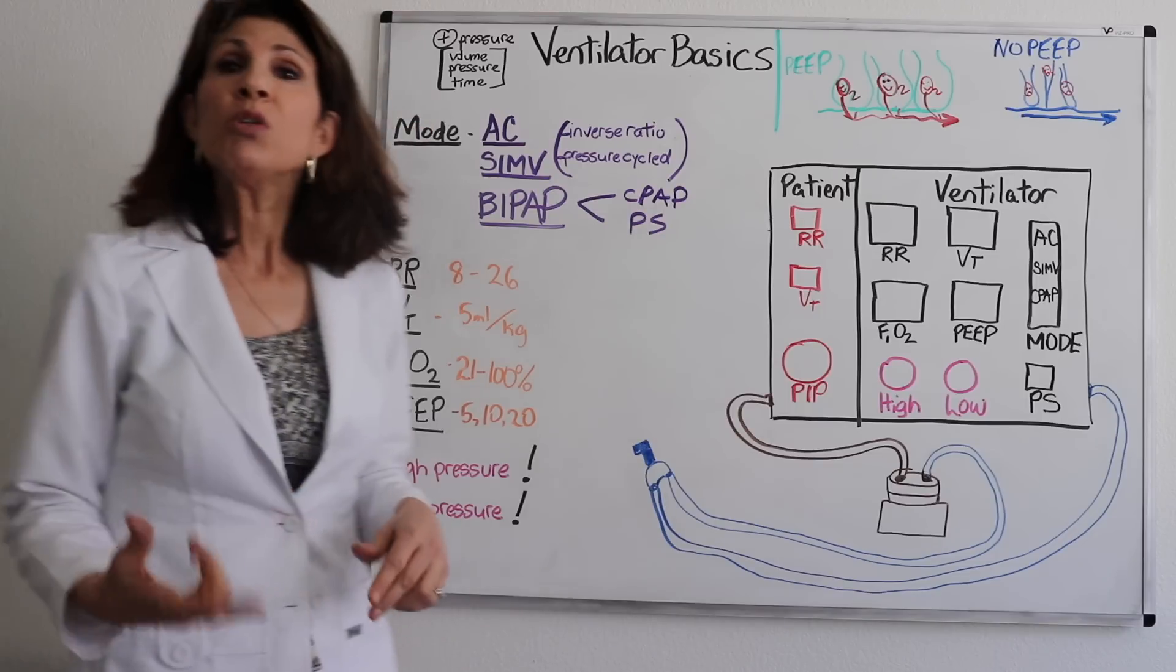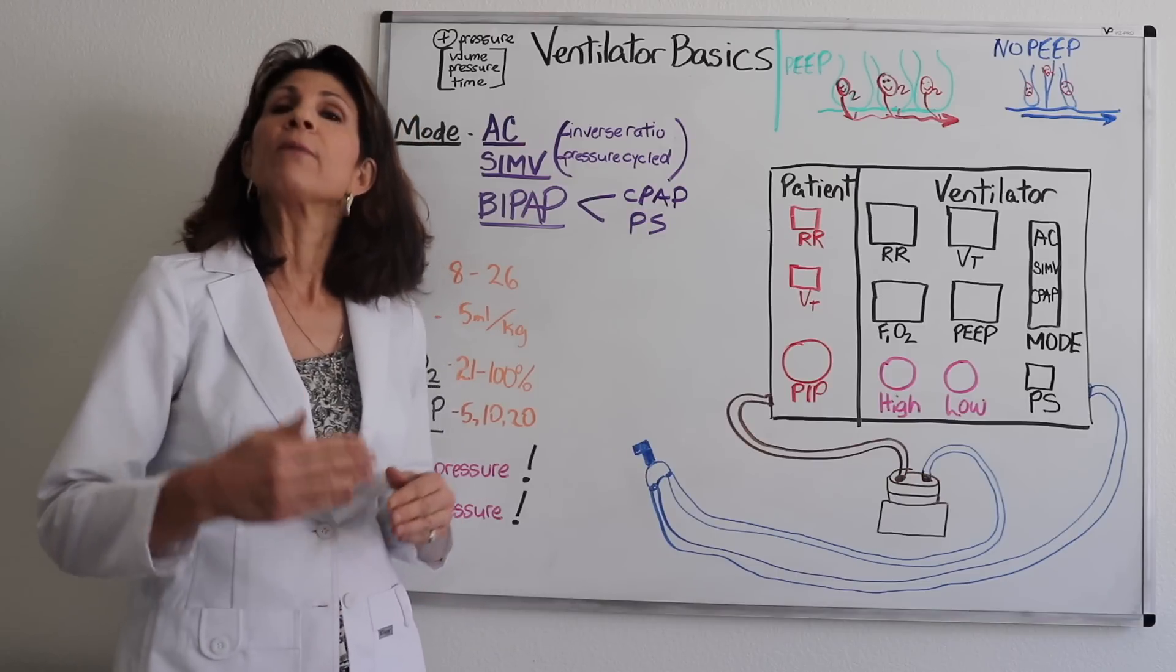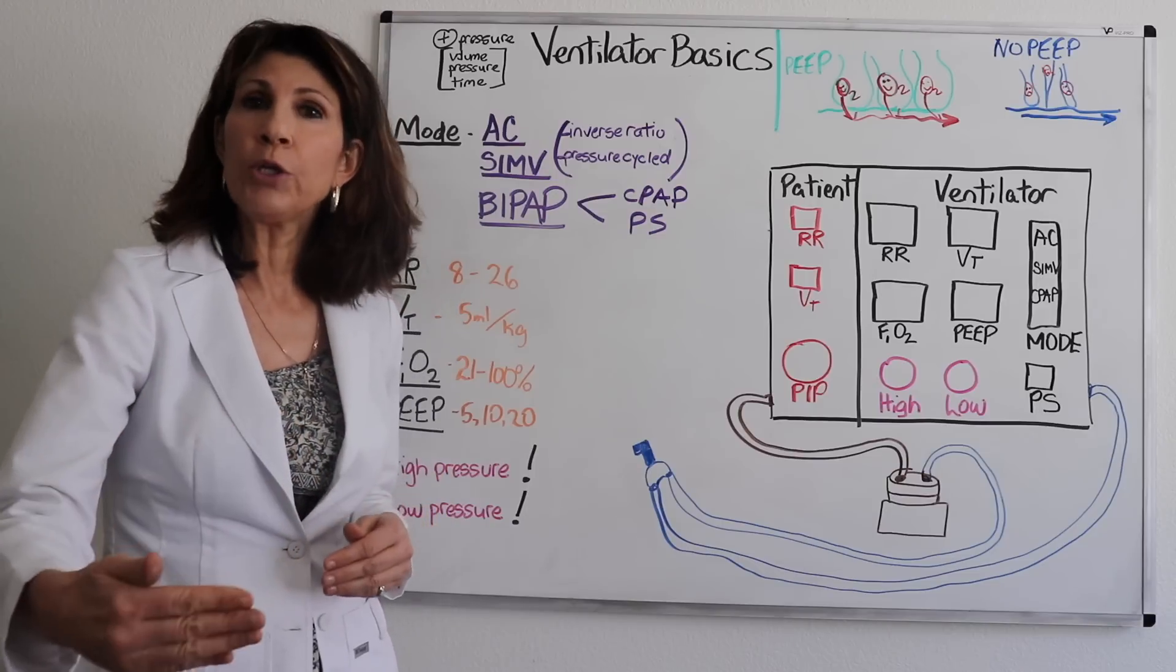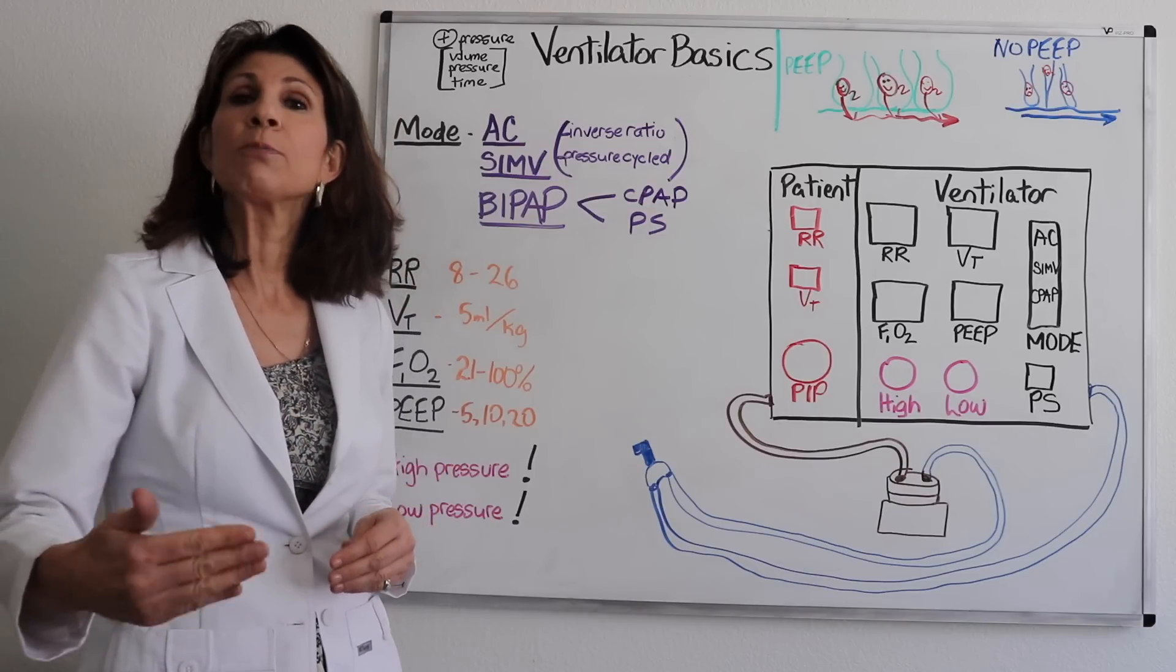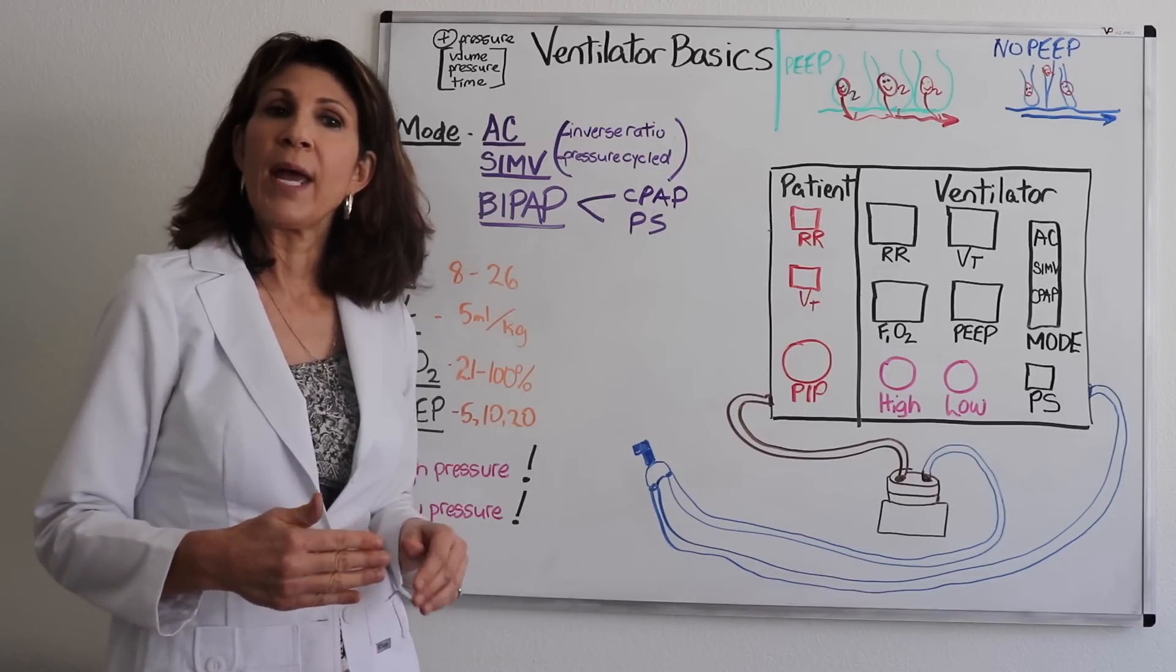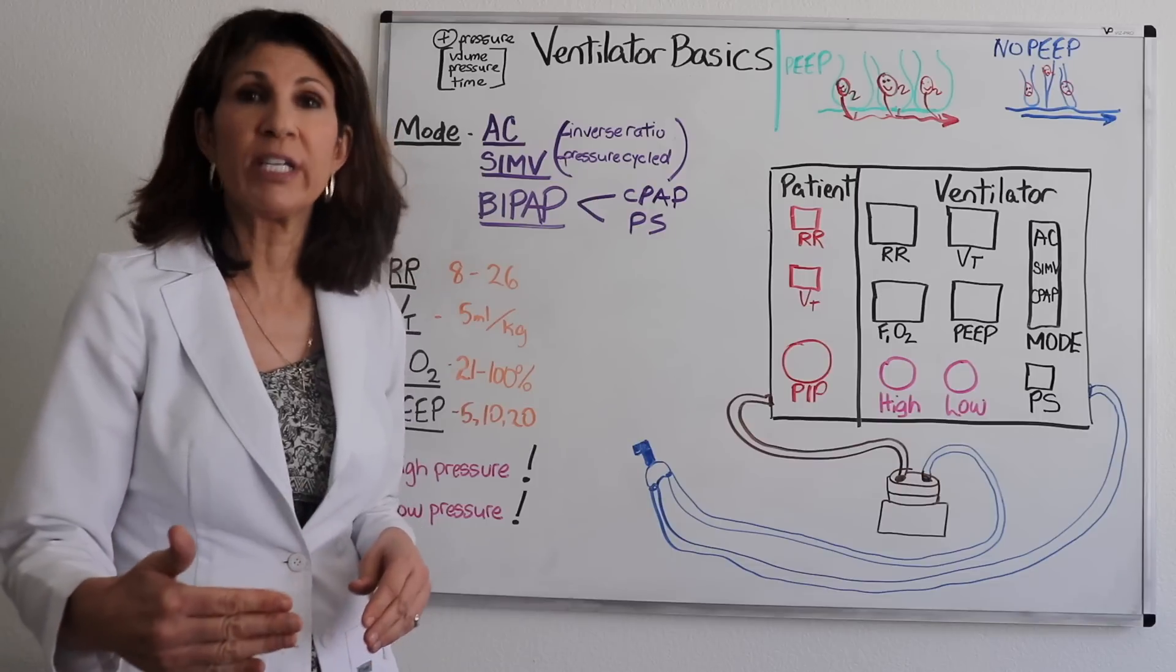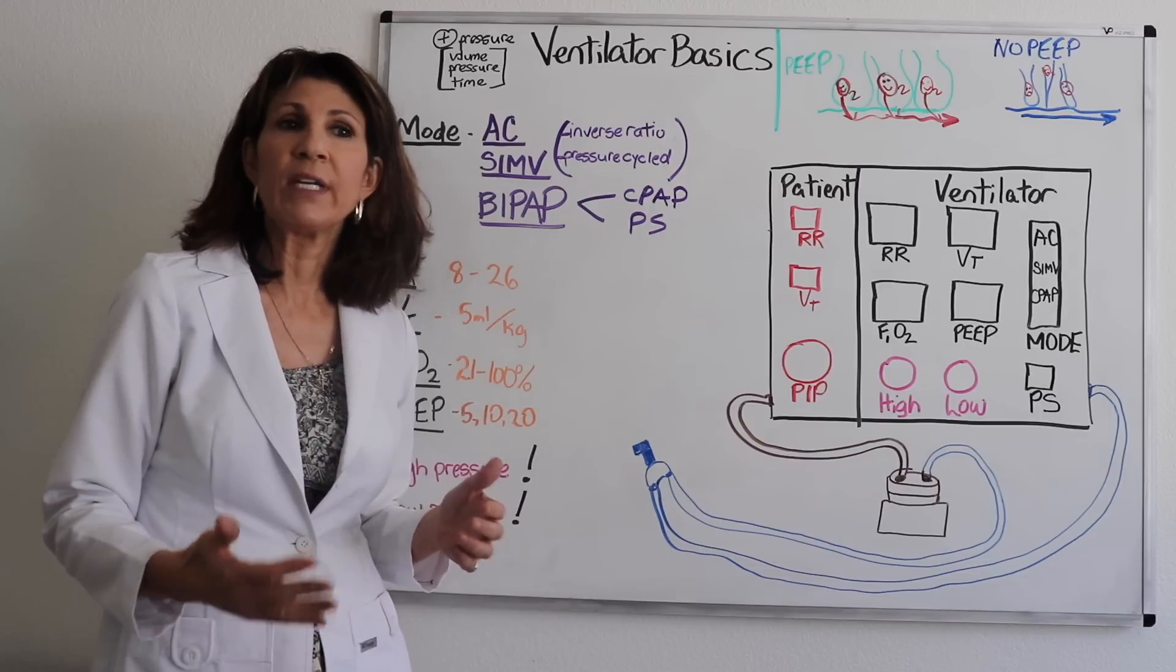Now, most of what we see is called volume cycle ventilation, meaning that when a preset volume is reached in the airway, the inspiratory phase ends. Pressure cycle ventilation is when the inspiratory phase ends when a preset pressure is reached. So there's advantages and disadvantages to both.